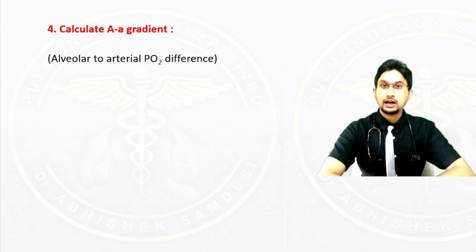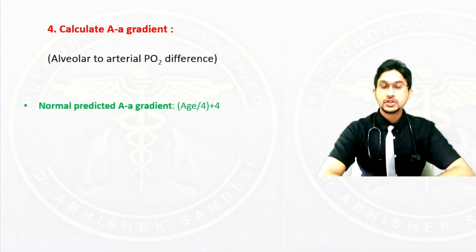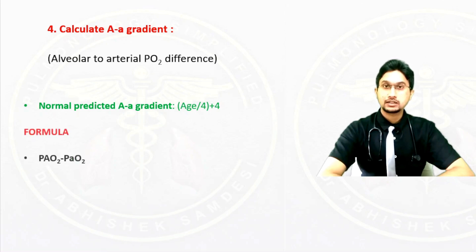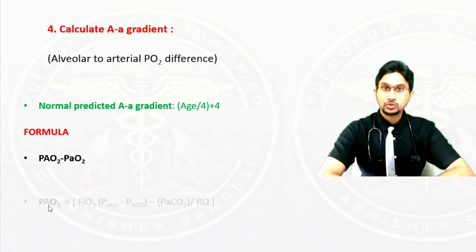The alveolar-arterial (AA) gradient is the difference between the oxygen in the alveolus and the arterial blood, giving us an idea regarding the diffusion status of the underlying lung. The formula for the AA gradient is age divided by 4 plus 4. It is calculated by subtracting the partial pressure of oxygen in the alveoli (PAO2) from the partial pressure of oxygen in the arterial blood (PaO2).